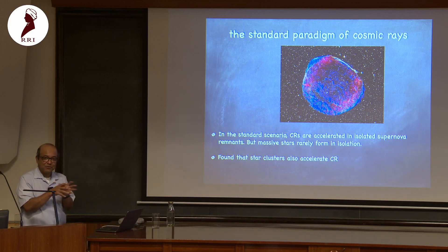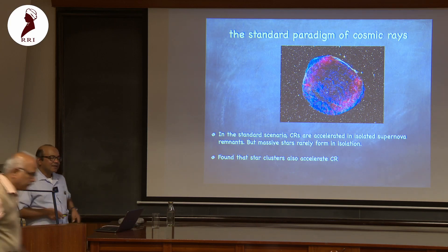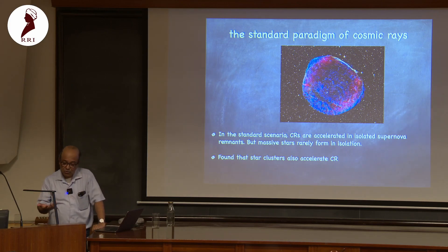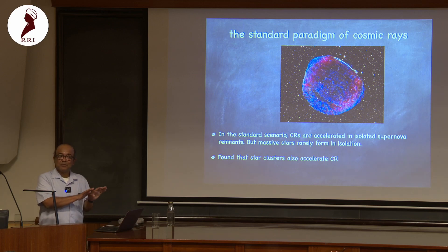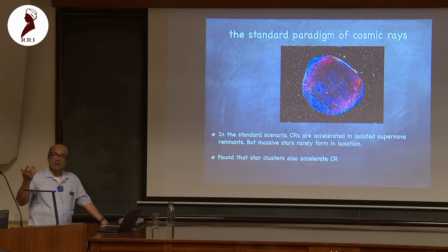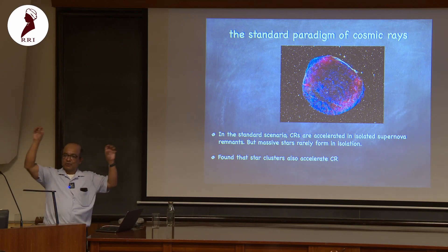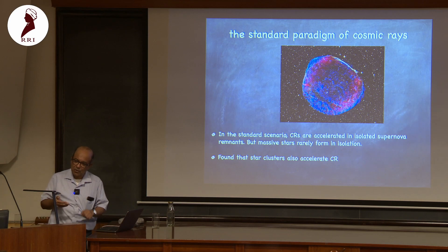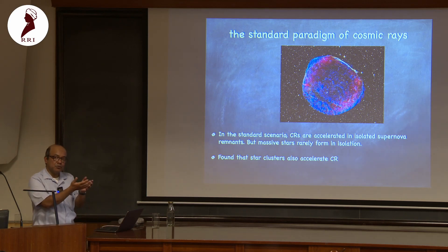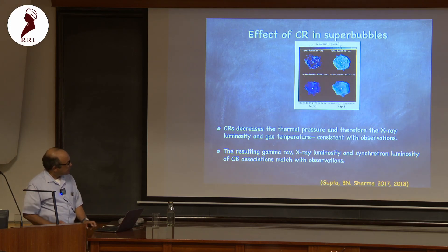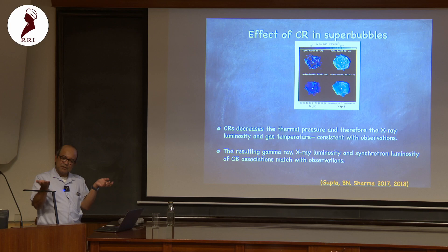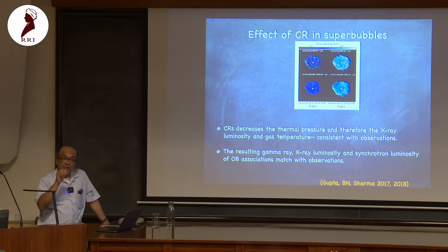Then we bumped into something very interesting. The shocks produced by the stellar wind are very strong, very high Mach number shocks that can accelerate cosmic rays. This is quite different from the standard paradigm — the standard scenario is that cosmic rays are mostly produced by supernova shocks. This is a completely different site. Then we realized: if there are cosmic rays at the stellar wind shock, this will decrease the thermal pressure, which means decreased X-ray luminosity — and we found that yes, this is indeed observed.